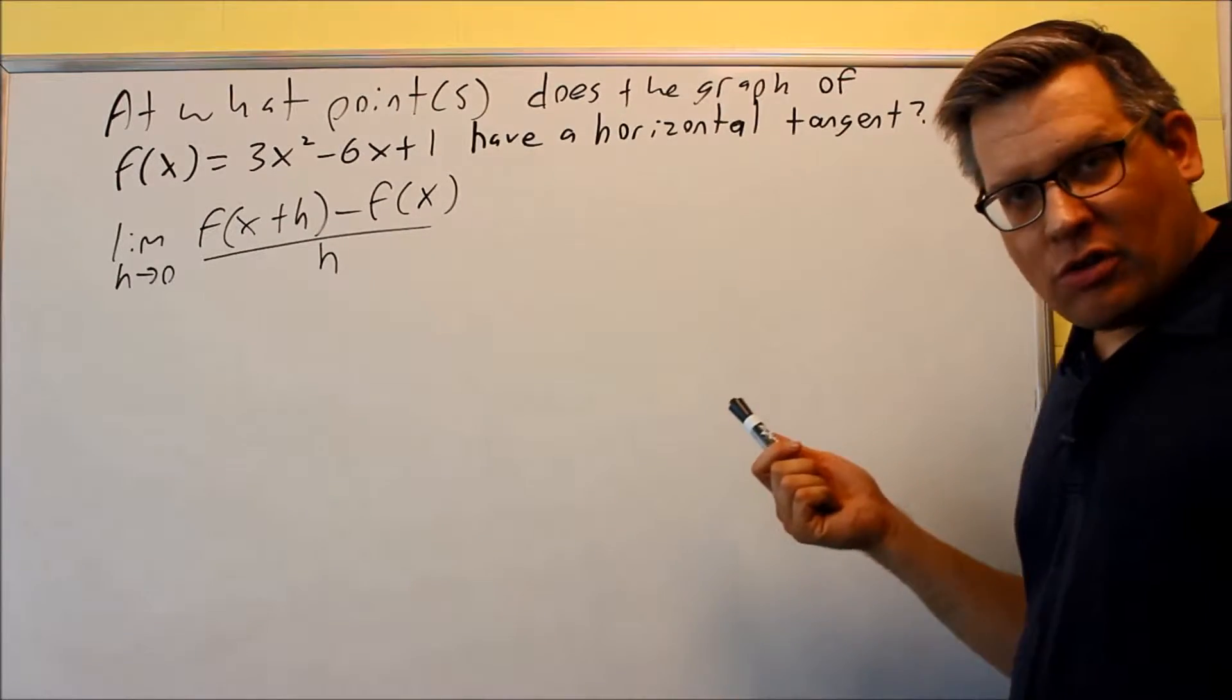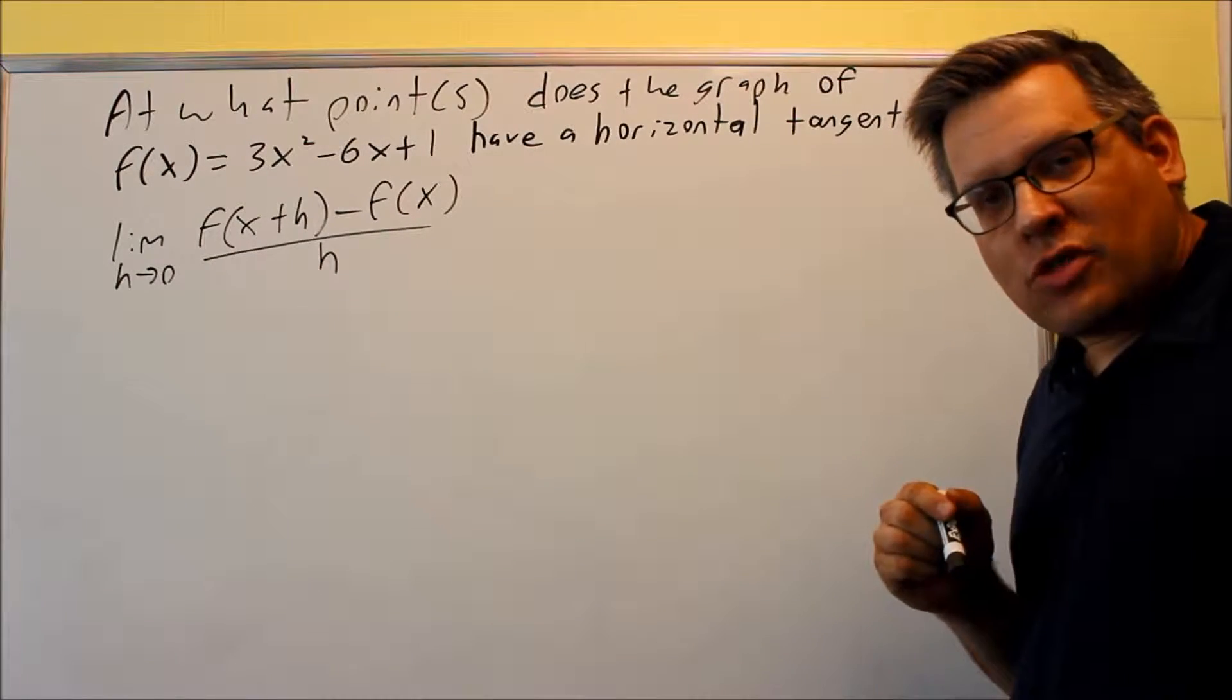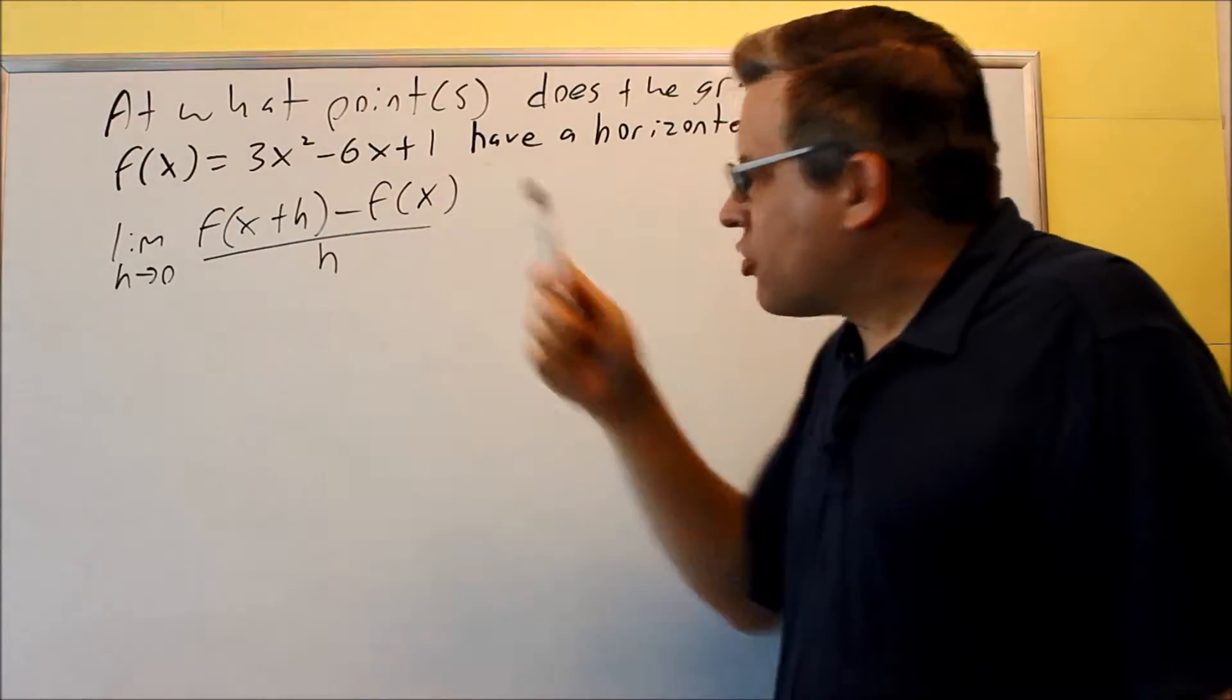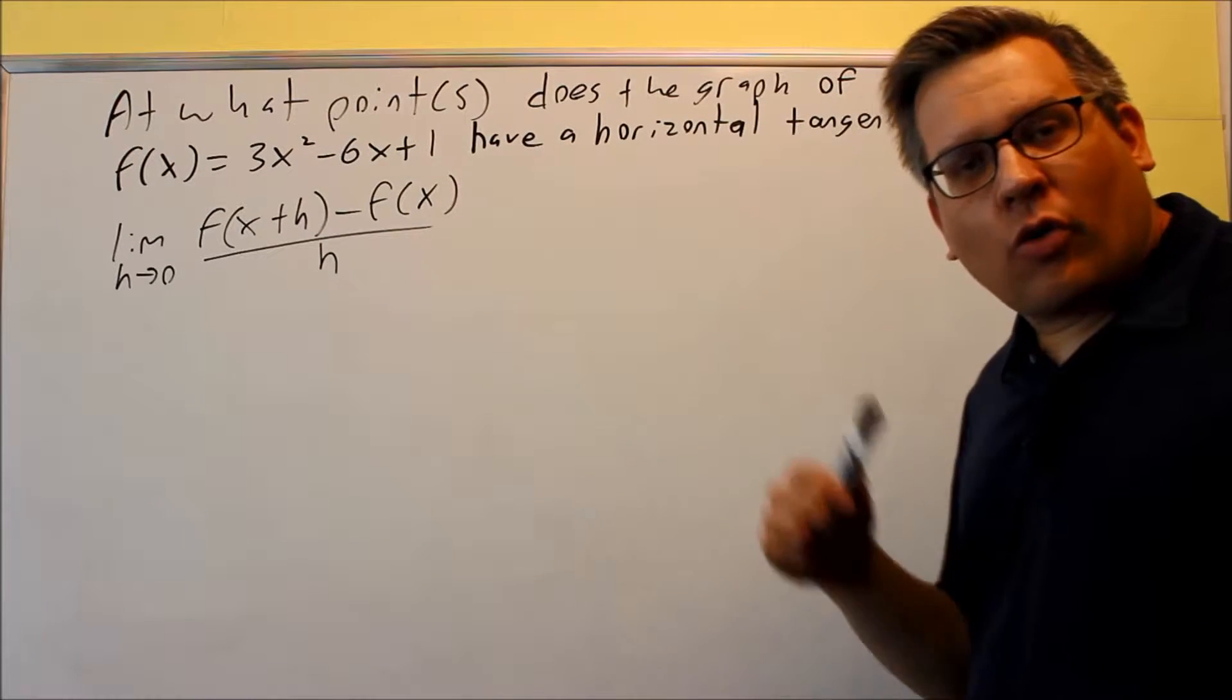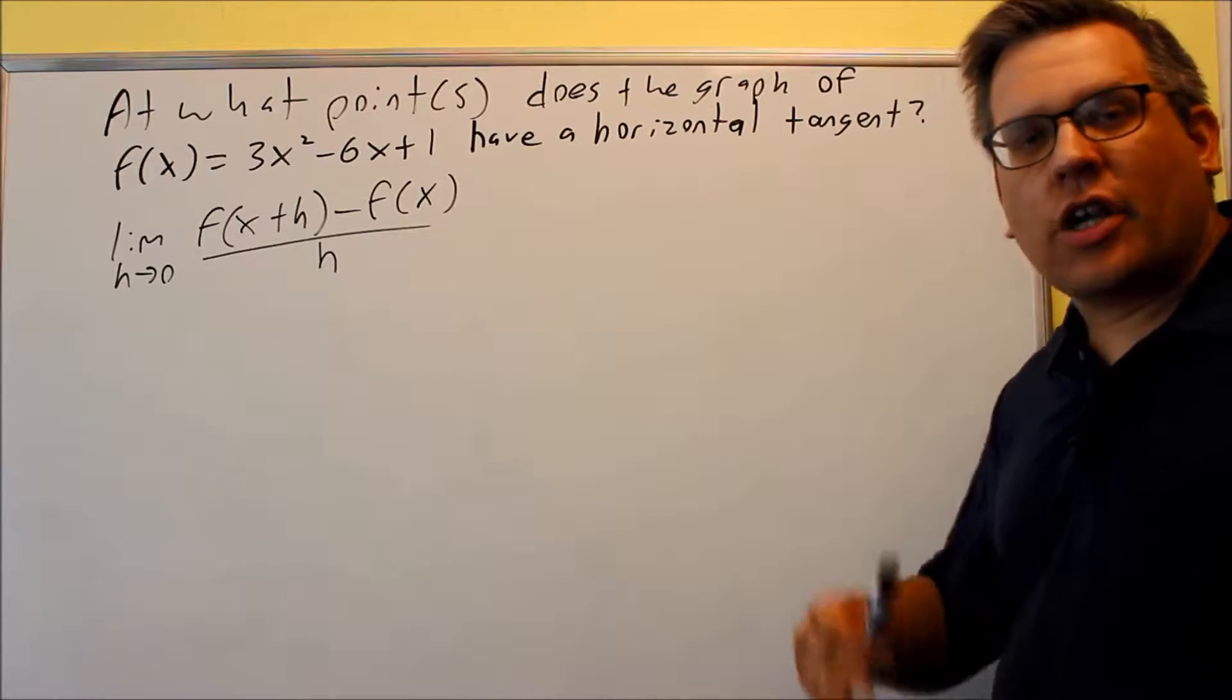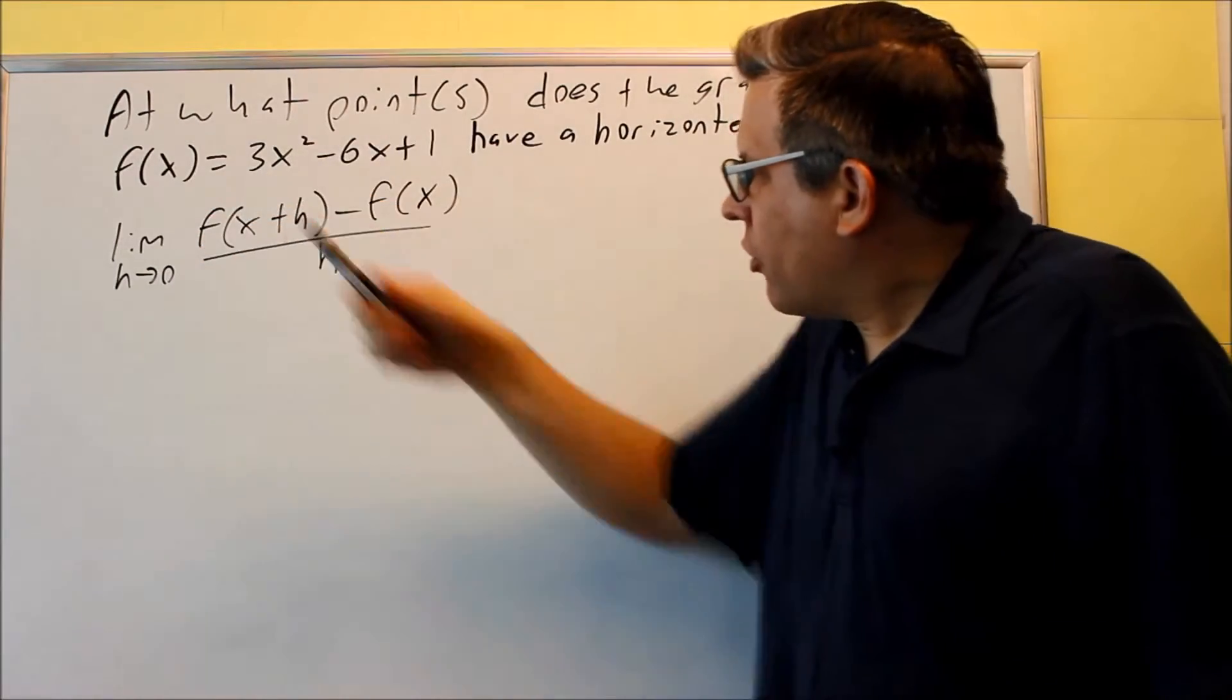So the first thing I'm going to do is use this formula. Now, problems we've done so far in this section, we had an x sub zero, but we don't have that given this time. So this time, we're just going to use regular x. Our answer is going to have an x in it, and what we'll get is an equation that we can use to find this slope at any particular value. That's called a derivative. Let's do that now.